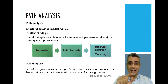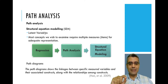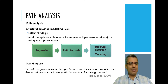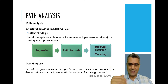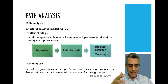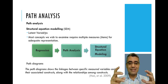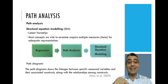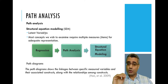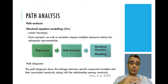In structural equation modeling, you can have latent constructs, whereas in regression analysis or path analysis we can have only observed variables. You may have seen papers that measured customer satisfaction and tested it using multiple regression analysis or path analysis. What they did was measure constructs using several items, then converted those items into an observed variable, and then used regression analysis.